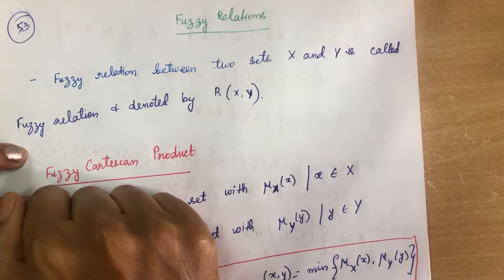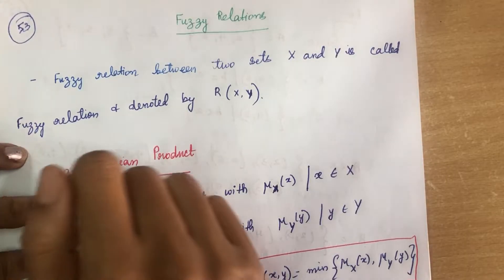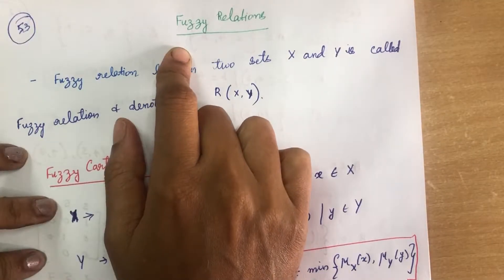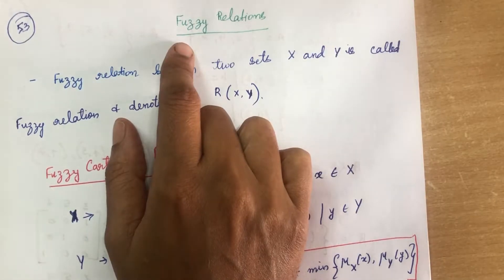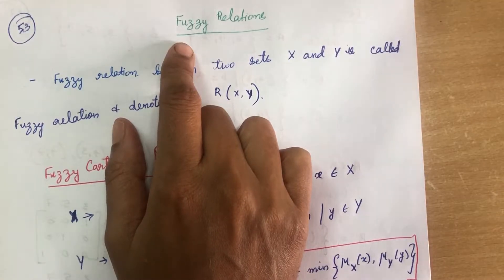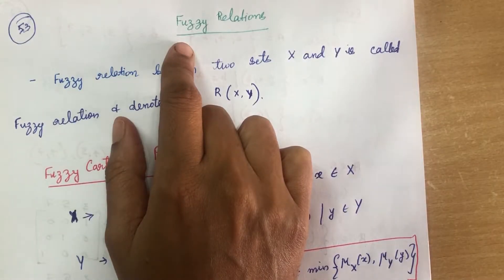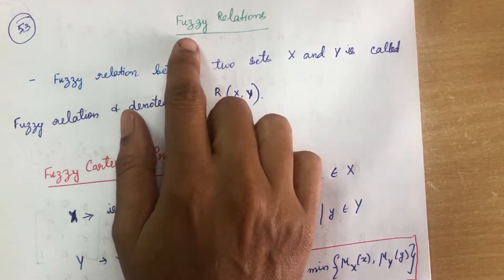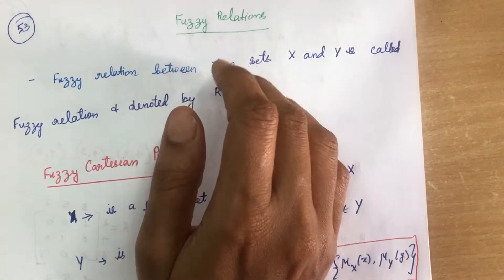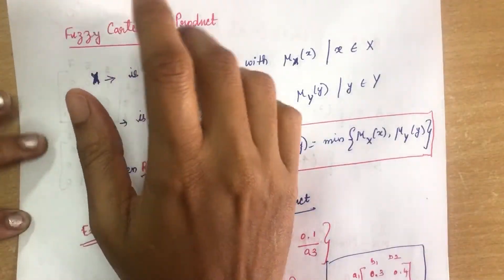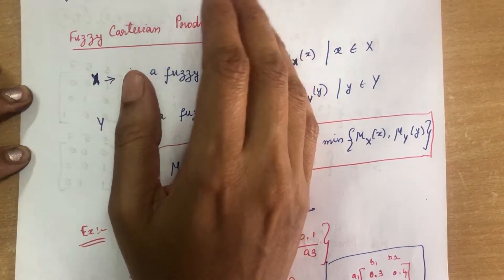Good morning everyone. Today I am going to teach you a topic on fuzzy relations. In the last video we discussed classical relations, their properties and operations, and also the composition of classical relations — there are two compositions: max-min composition and max-product. Today I am going to teach you the same properties and operations on fuzzy relations.